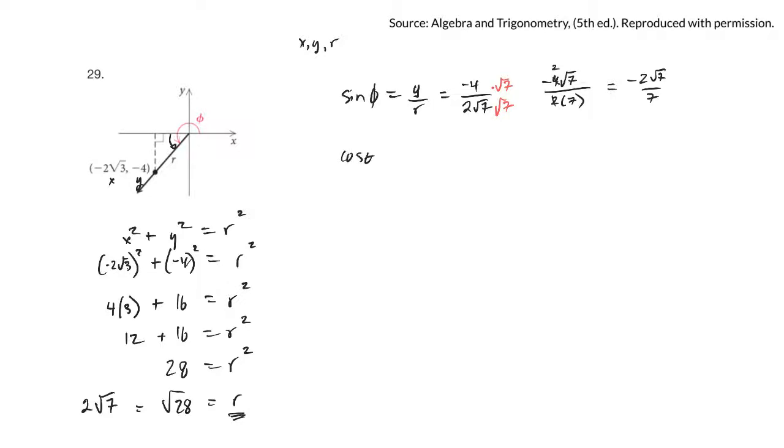Then cos of that angle is x over r. x is negative 2 root 3 over r which is 2 root 7. Do the same thing, multiply top and bottom by root 7. On the top, since these are both under the radical, I can multiply them. So it would be negative 2 root 21 over 2 times 7, or 14.